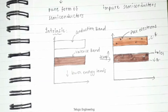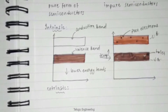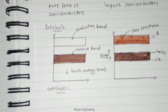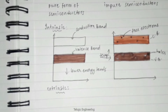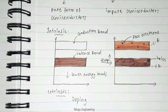A semiconductor to which an impurity at a controlled rate is added to make it conductive is known as an extrinsic semiconductor. An intrinsic semiconductor is capable of conducting a little current at room temperature, but it is not useful for preparing various electronic devices. Thus, to make it conductive, a small amount of suitable impurity is added. The process by which an impurity is added to a semiconductor is known as doping.